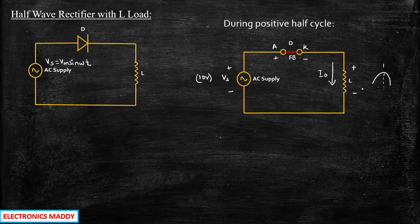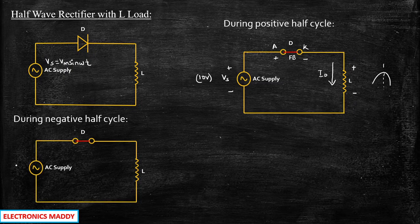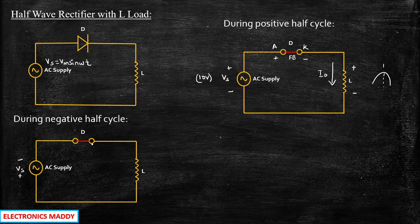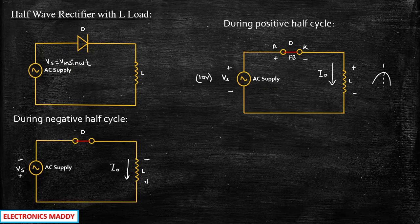During the negative half-cycle, the supply voltage will obviously be negative — minus and plus. You will be surprised if I say the diode still conducts, because minus is connected to anode and plus is connected to cathode. But that does not happen here. The reason is because the inductor does not allow sudden change in current, and the inductor will allow the current to flow in the same direction it was previously flowing, according to the property of Lenz's law. So it will basically reverse its polarity as minus and plus, and allow the current to flow in the same direction.